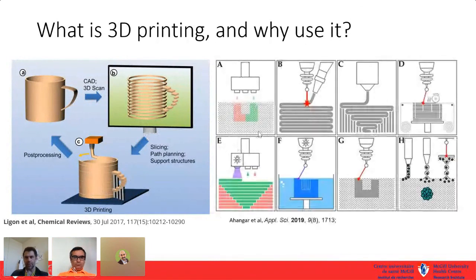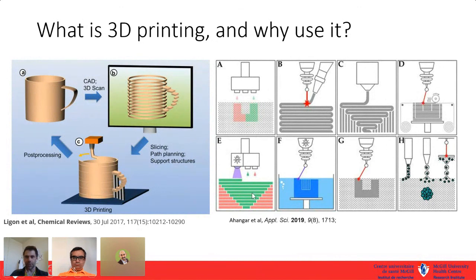There are different types of 3D printing: binder jetting, laser-assisted printing, fused deposition modeling, laser sintering, photo curing, and bioprinting — where you have live cells in a gel-like material which serves as the ink.